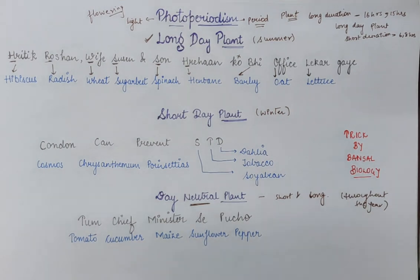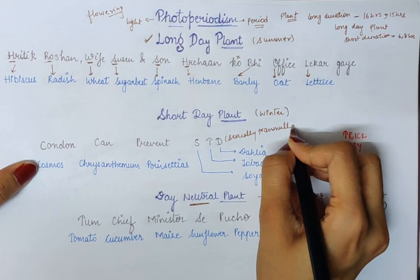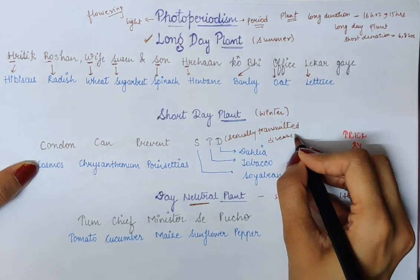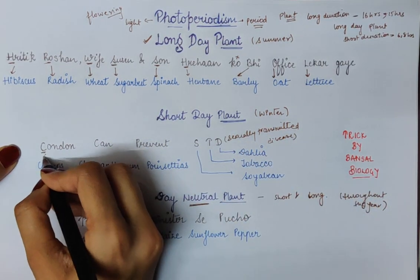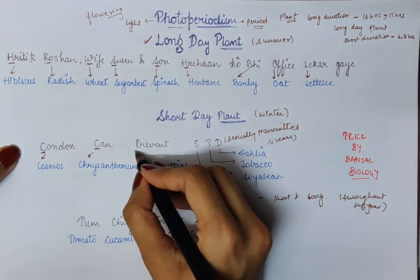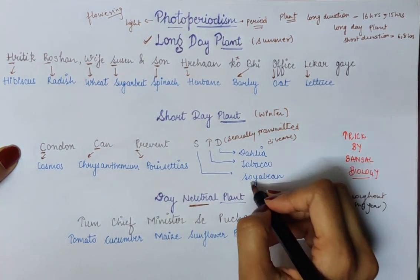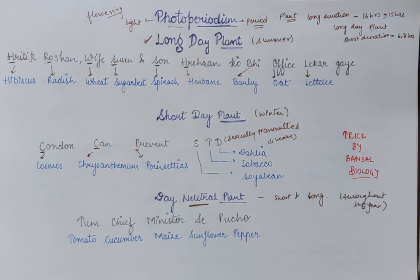Then for short day plants, the mnemonic is: 'condom can prevent STD' — STD meaning sexually transmitted diseases. From 'condom', C gives us cosmos. From 'can', C gives us chrysanthemum. From 'prevent', P gives us poinsettia. From 'S' gives us soya bean, 'T' gives us tobacco, and 'D' gives us dahlia.